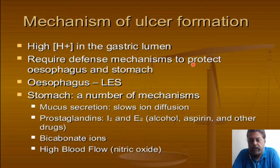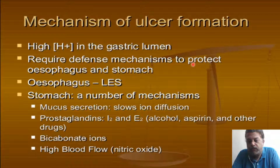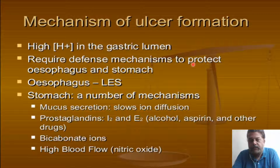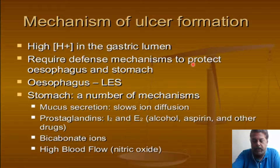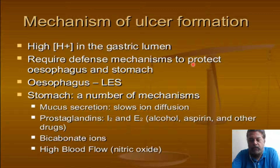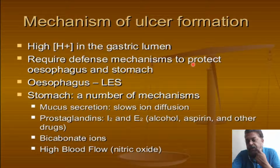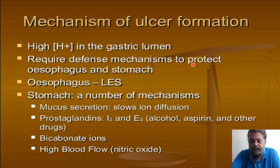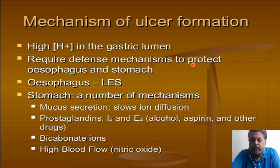High blood flow increases the nitric oxide content, which is used as an ulcer-protective agent. So in a patient where blood flow is less, that will decrease the nitric oxide content of the muscularis mucosa and will cause ulcer formation. This is especially seen in burn patients and shock patients where blood flow to the gastric mucosa is decreased because of decreased cardiac output.